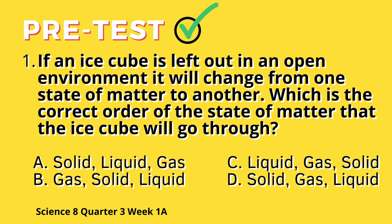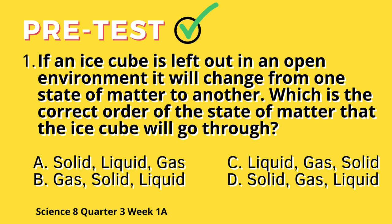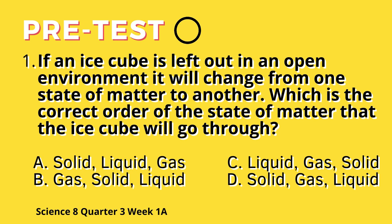Question 1: If an ice cube is left out in the open, it will change from one state of matter to another. What is the correct order of the state of matter that the ice cube will go through? A. Solid, liquid, gas. B. Gas, solid, liquid. C. Liquid, gas, solid. D. Solid, gas, liquid.